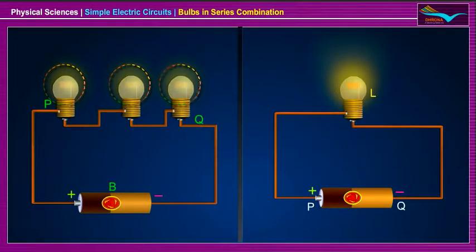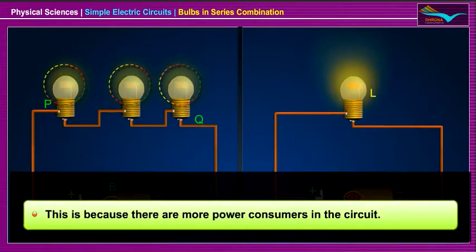As the number of bulbs increases in the series combination with the same single power source, the brightness of each of the bulb decreases compared to the brightness of only a single bulb in the circuit. This is because there are more power consumers in the circuit.